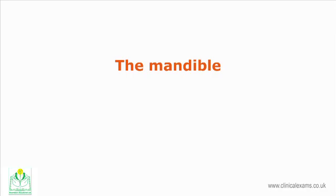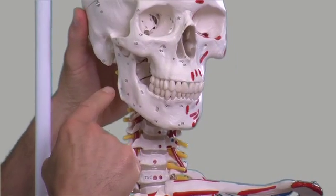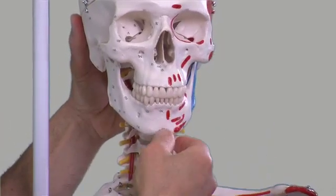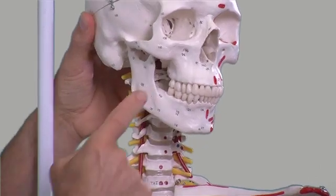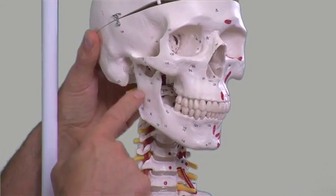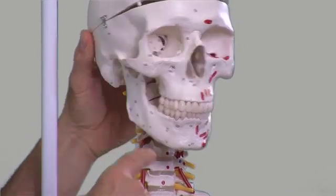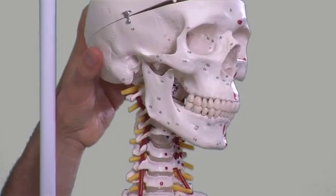The mandible is the lower component of the jaw. The body of the mandible is the horizontal component which also contains the alveolar processes or teeth sockets. The rami are the two perpendicular portions which connect to the posterior part of the body of the mandible, forming the angles of the mandible. These are more prominent in men. The rami are about 7 cm long.